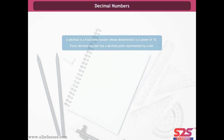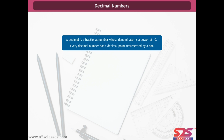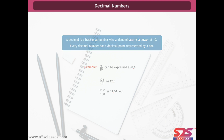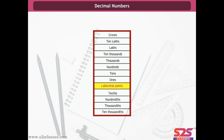Decimal numbers: a decimal is a fractional number whose denominator is a power of 10. Every decimal number has a decimal point represented by a dot. For example, 6 ÷ 10 = 0.6; 123 ÷ 10 = 12.3; 1151 ÷ 100 = 11.51. Starting from the decimal point towards the left, the place values are 1s, 10s, 100s, 1000s, 10,000s; and towards the right they are tenths, hundredths, thousandths, ten-thousandths.